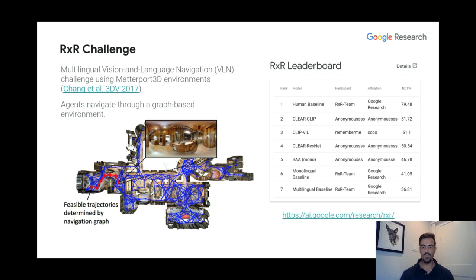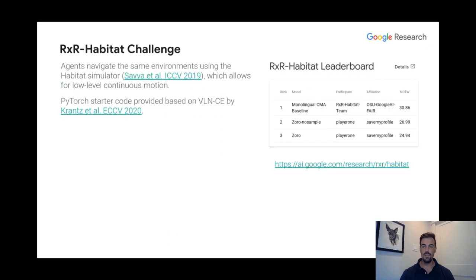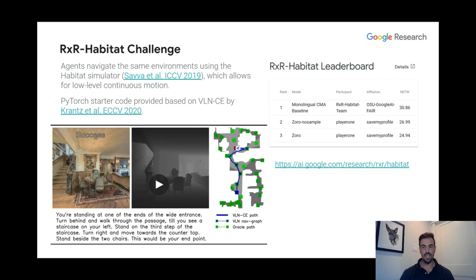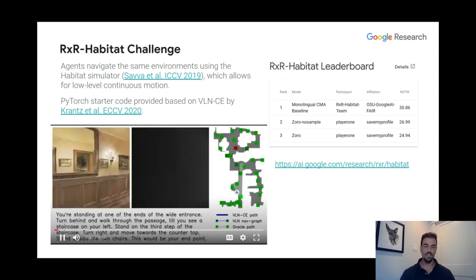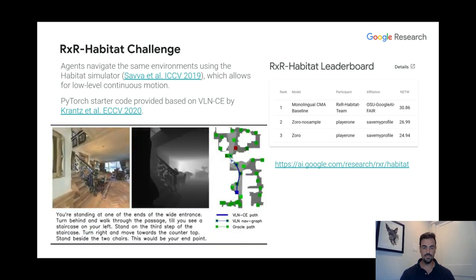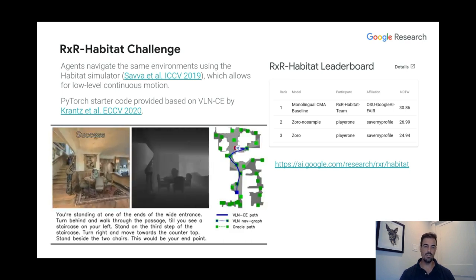Based on the RxR dataset, two challenges have been launched. First is the RxR challenge, where agents must follow these multilingual navigation instructions and navigate through a graph-based environment — a leaderboard is available at the URL shown. There is also the RxR Habitat challenge, where agents follow the same instructions in the same environments but using the Habitat simulator, which allows for low-level continuous motion. This is a very challenging task combining multilingual language understanding, visual grounding, and low-level control in these reconstructed environments. Submissions remain open, and we encourage everyone to have a look.